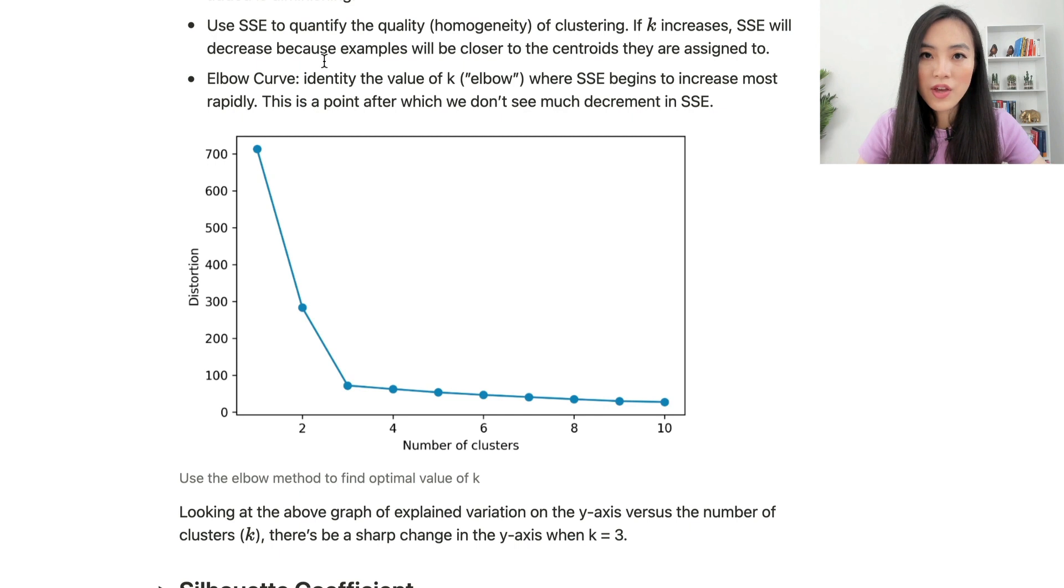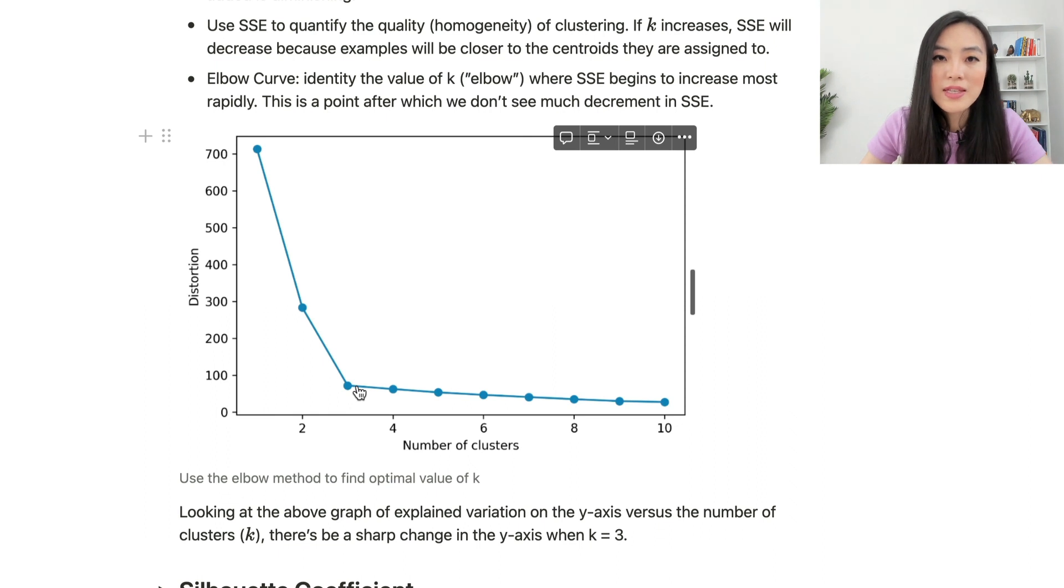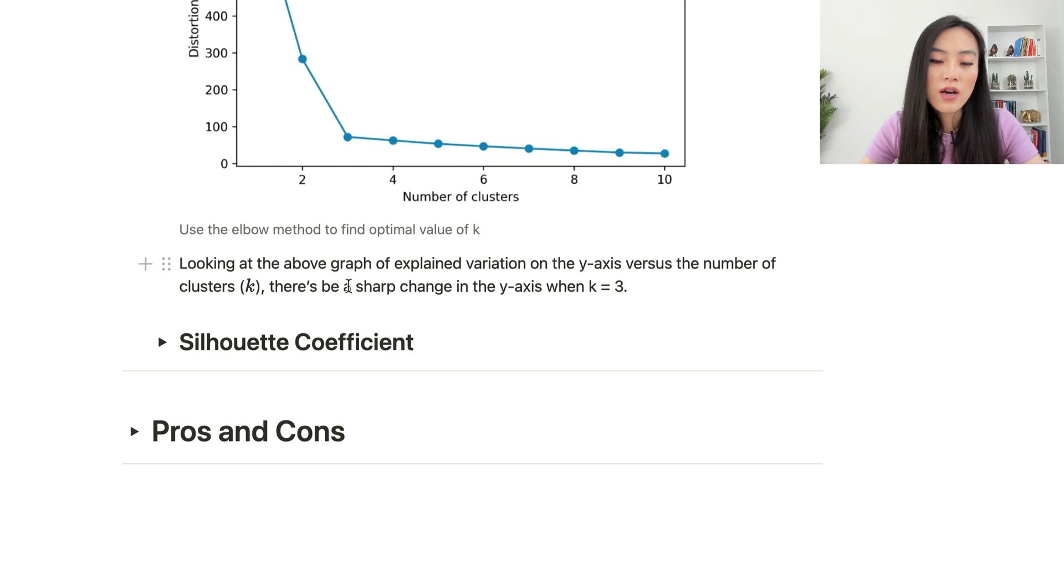Here's an example plot using the elbow method to find the optimal value of K. We have K on the x-axis, number of clusters, and on the y-axis is distortion, which is the same as SSE. Clearly there's a sharp change in the y-axis when K equals three. After this point, SSE decreases continuously but we don't see much decrease in SSE. It means that choosing three centroids is probably a good option for this particular dataset.